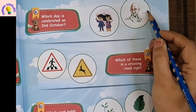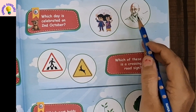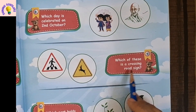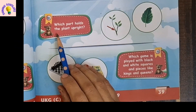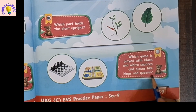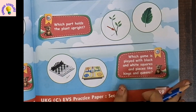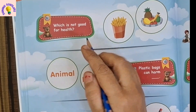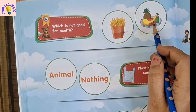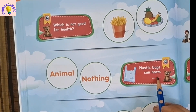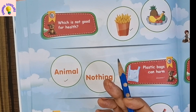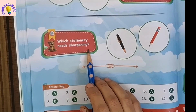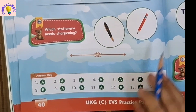Which day is celebrated on 2nd October? Gandhi Jayanti — you can see the picture of Mahatma Gandhi. Which of these is a road crossing sign? The person is walking on the zebra crossing. Which part holds the plant upright? Stem holds the plant upright. Which game is played with black and white squares and pieces like kings and queens? It's chess. Which is not good for health? French fries are not good for health; fruits and vegetables are good. Plastic bags can harm animals — animals can eat plastic bags. Which stationery needs sharpening? This pencil. At the end is the answer key.